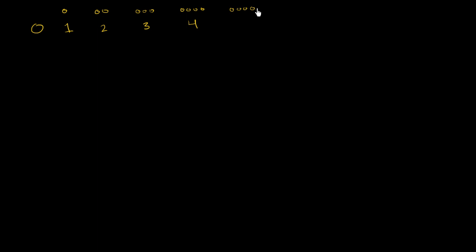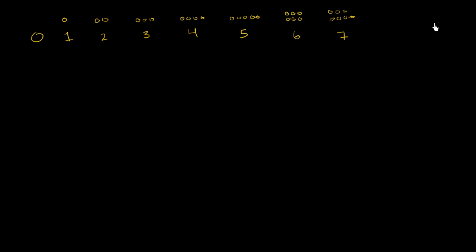We have 10 digits in our number system. So let me just start counting. If I have nothing, I use the symbol 0. Then if I have one object, I use the symbol 1. If I have two things, I use the symbol 2. If I have three things, I use the symbol 3. If I have four things, I use this symbol. If I have five things, I use this symbol. If I have six things, I use that symbol. If I have seven things, I use that symbol. If I have eight things, I use this symbol. And if I have nine things, I use this symbol.